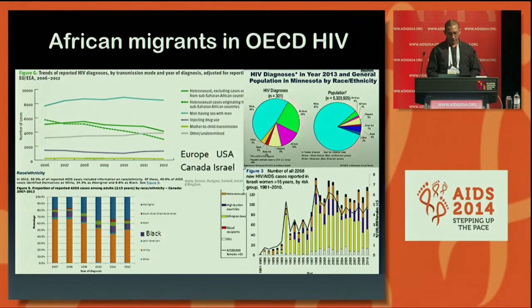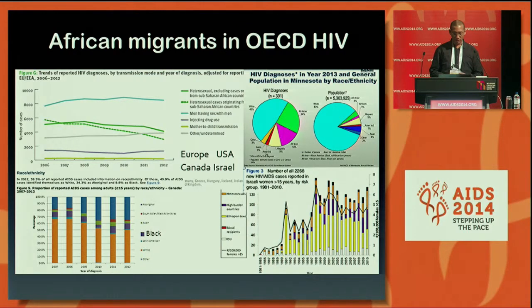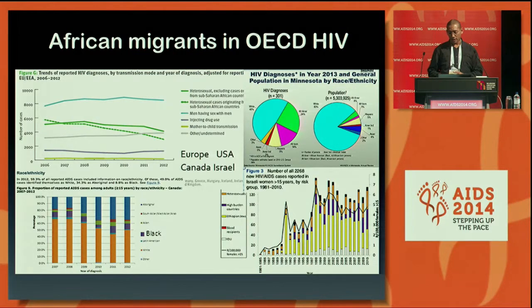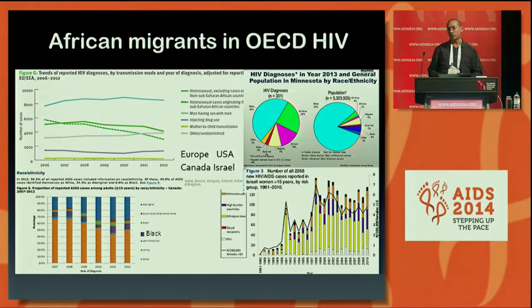Looking in more detail at heterosexual epidemic trends: in the top left, the presence of black African people in the United Kingdom is sufficient to have the figures split between heterosexual African and non-African population, as they don't fit on the same scale. In the top right, in the US state of Minnesota, 1% of the population is African-born, but there's a much higher proportion of African people in HIV diagnoses. In Israel, both Jewish immigrants from Ethiopia and non-Jewish African migrants form quite a large proportion of the HIV epidemic.